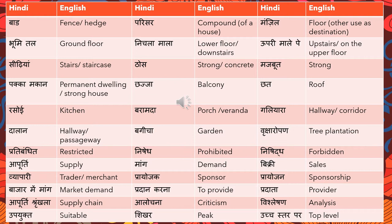'Galiara' means hallway or corridor. It can also be used to translate 'aisle' — for example, if you want an aisle seat on a flight, you would say 'mujhe galiare ki kursi chahiye.' The meaning depends on context, so make sure you use these words correctly. 'Dalan' also means hallway or passageway.